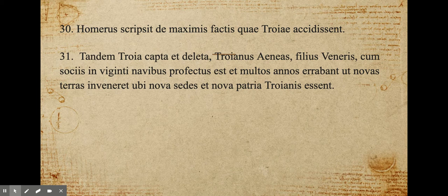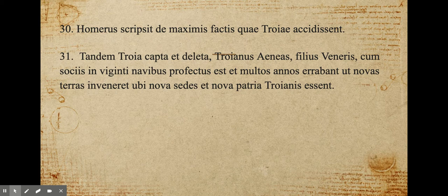There's a nice ablative absolute there — capta and deleta are PPPs, perfect passive participles, describing Troy. So finally, with Troy having been captured and destroyed, the Trojan Aeneas, son of Venus, with his allies, in 20 ships set out and wandered for many years in order to find new lands where the new seats and a new fatherland might be for the Trojans.